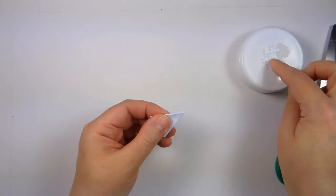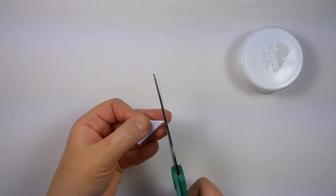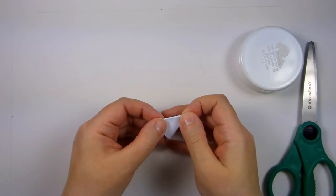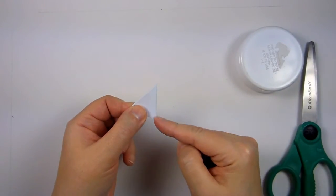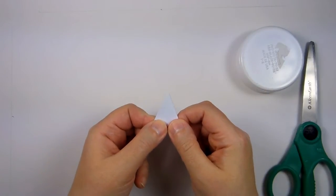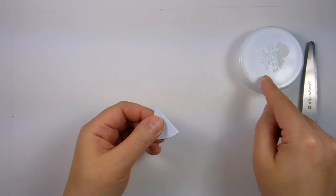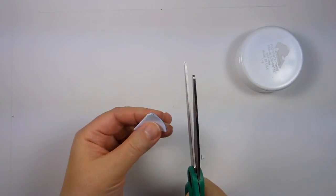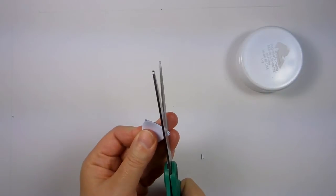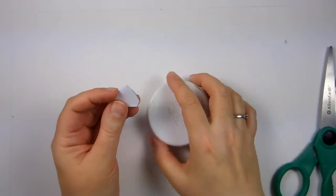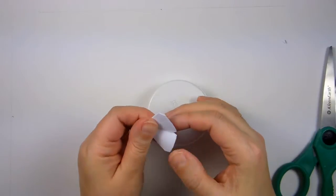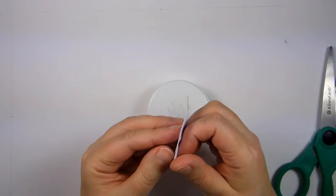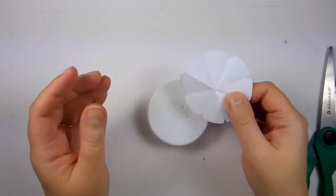So to mark the center of this, what you're going to do is you're going to cut off that tip. That marks the center. And then all of these folds represent a point that you're going to mark on here, so you're going to cut off those tips. What you're going to do is open this up, and you'll have your 8 points and your center.